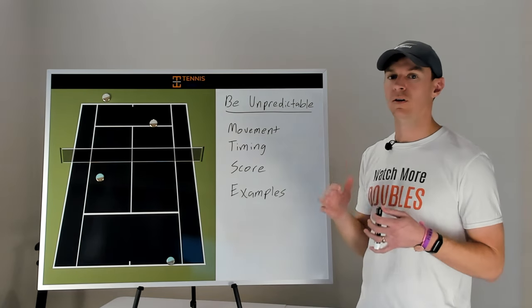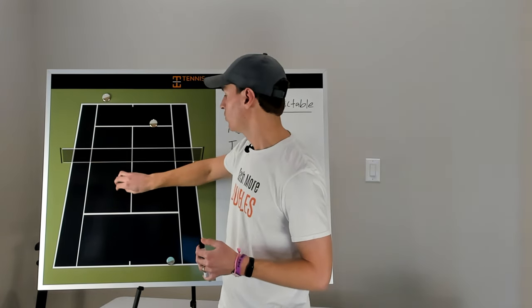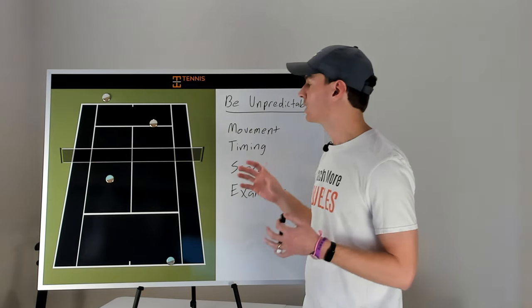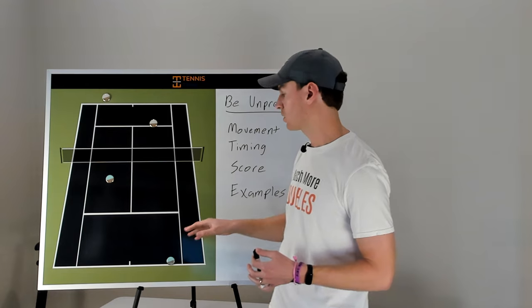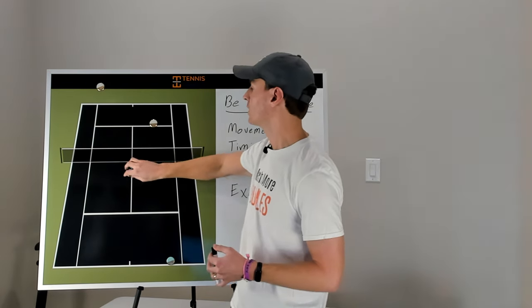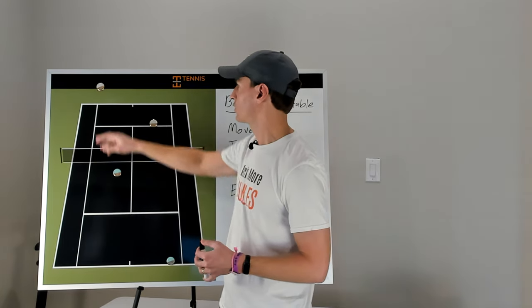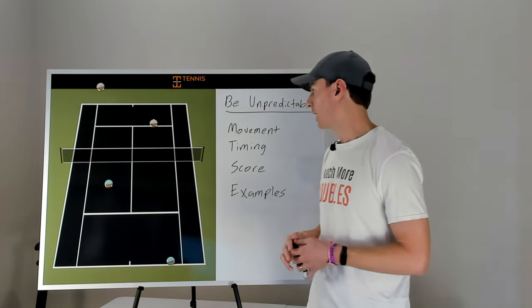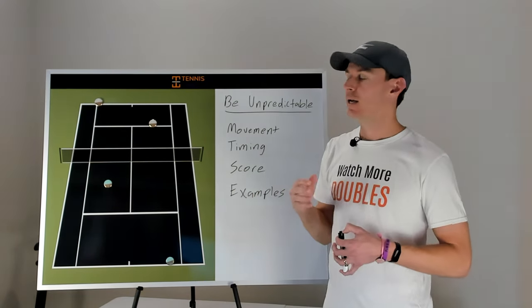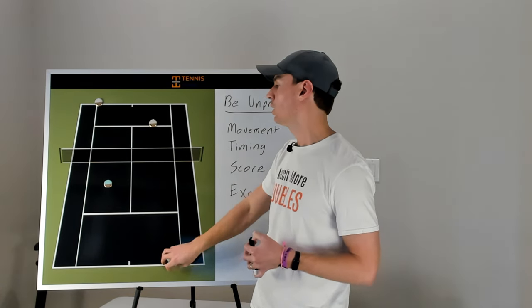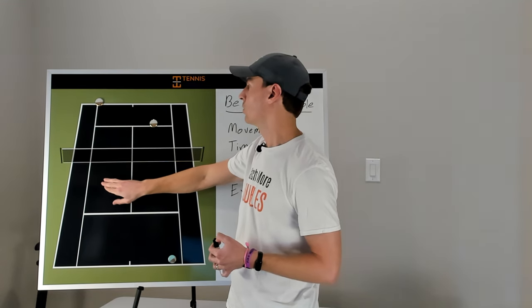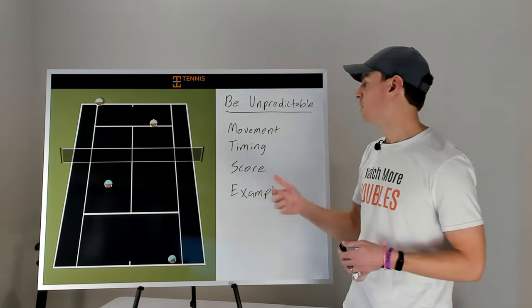The first way we want to be unpredictable is with our movement — mostly lateral movement. Moving forward and backwards really depends on offense and defense, and we have separate lessons on that. With lateral movement, we want to keep the opponent at the baseline guessing. If they're hitting a forehand from behind the baseline, maybe on one ball we poach, on the next we move toward the middle early and then fake, and on the next we just pinch a little toward the middle and give up the alley as a low-percentage shot. This creates doubt in their mind and puts pressure on them to hit a quality cross-court ball, forcing more errors even when you don't poach.